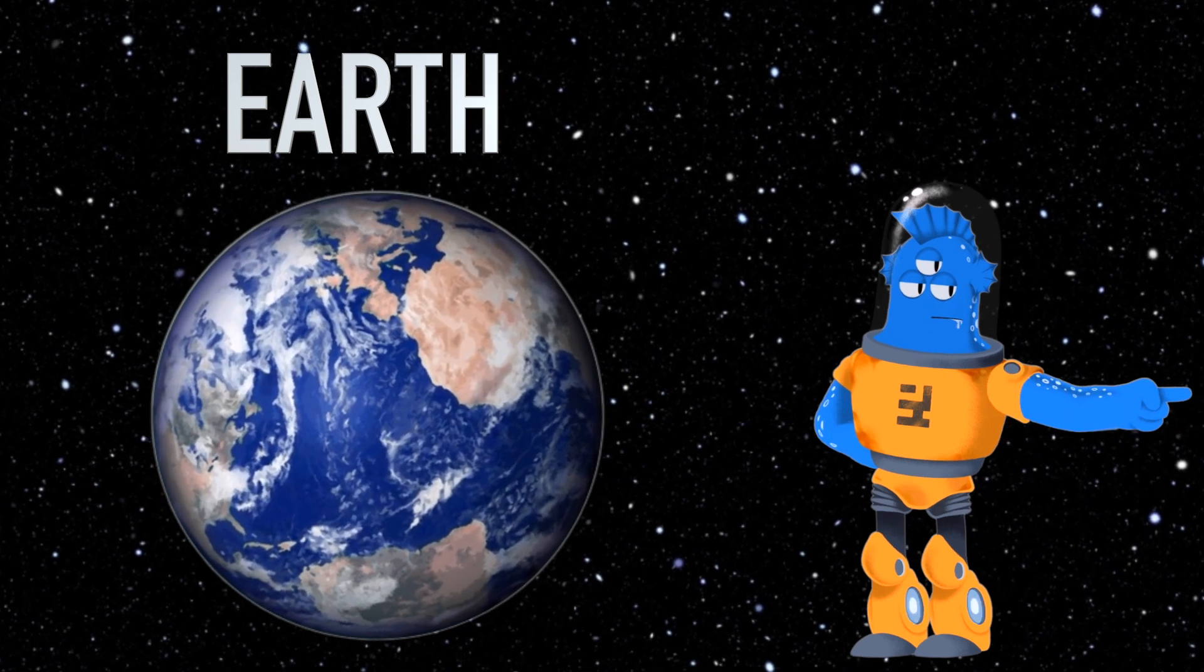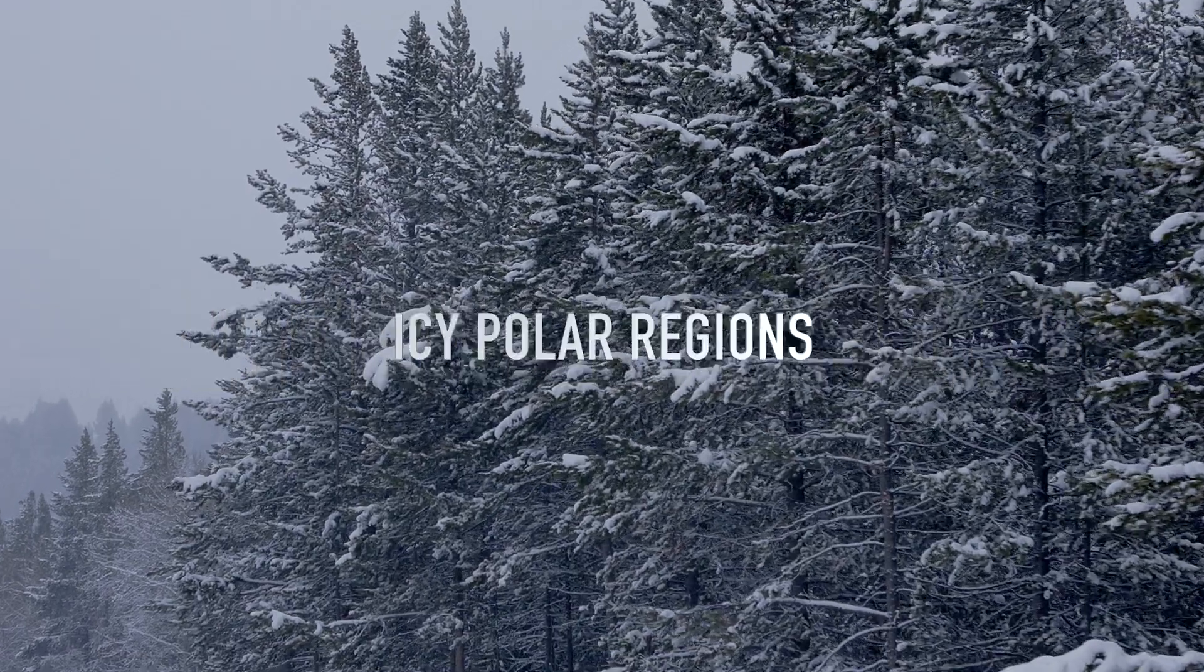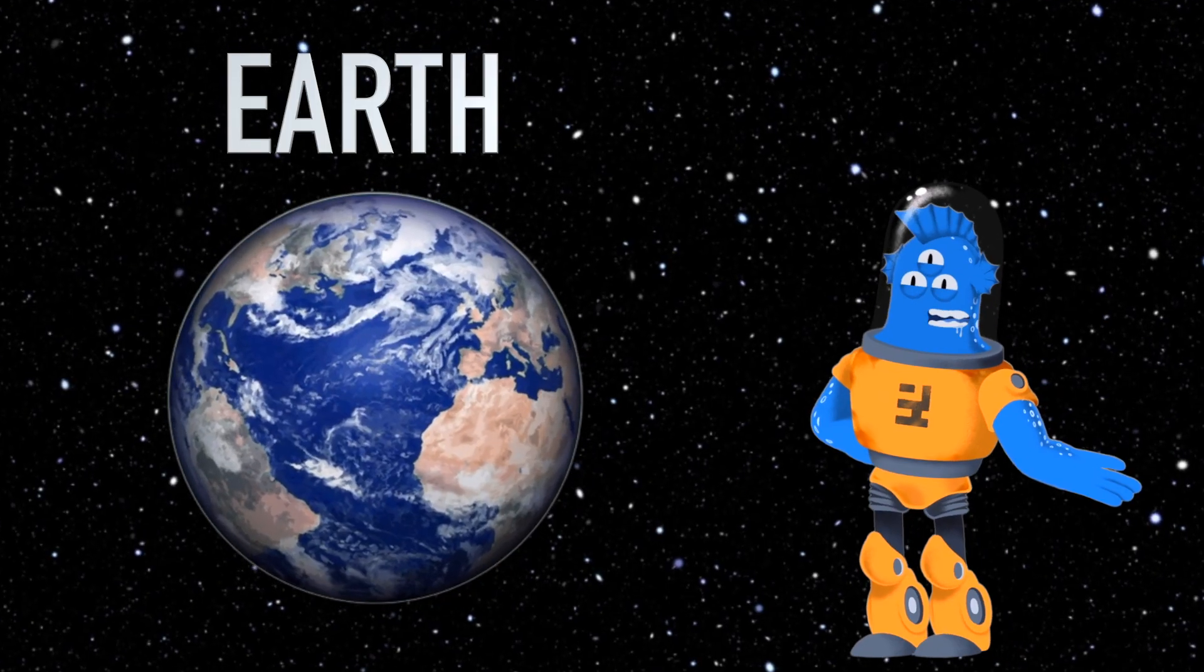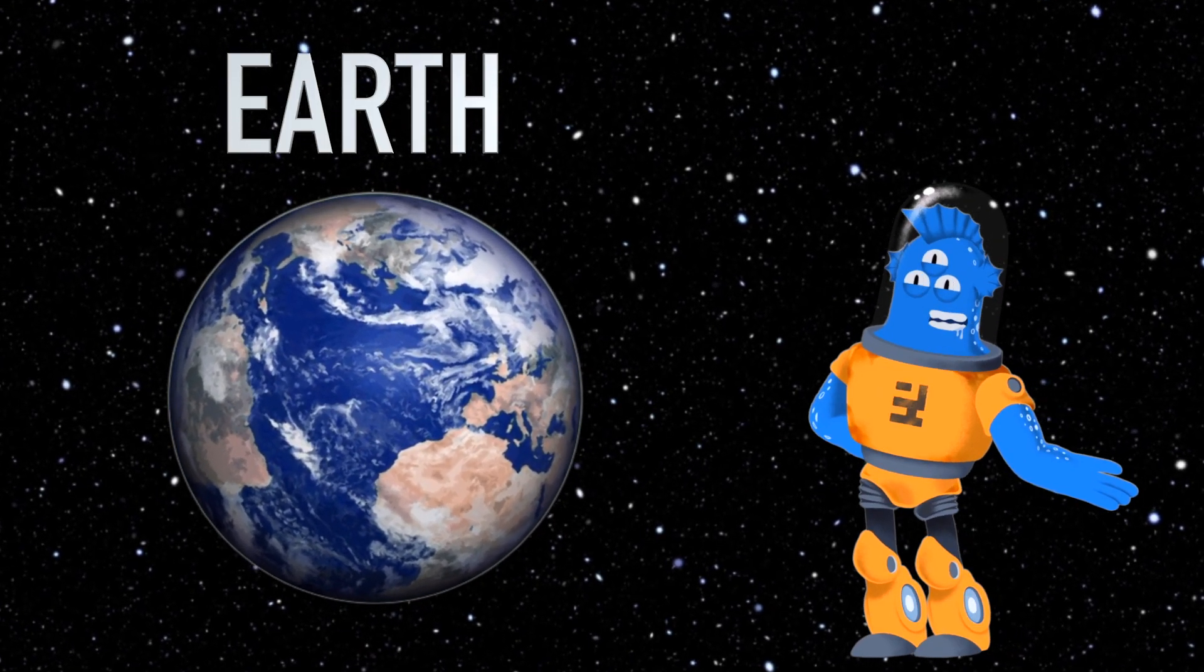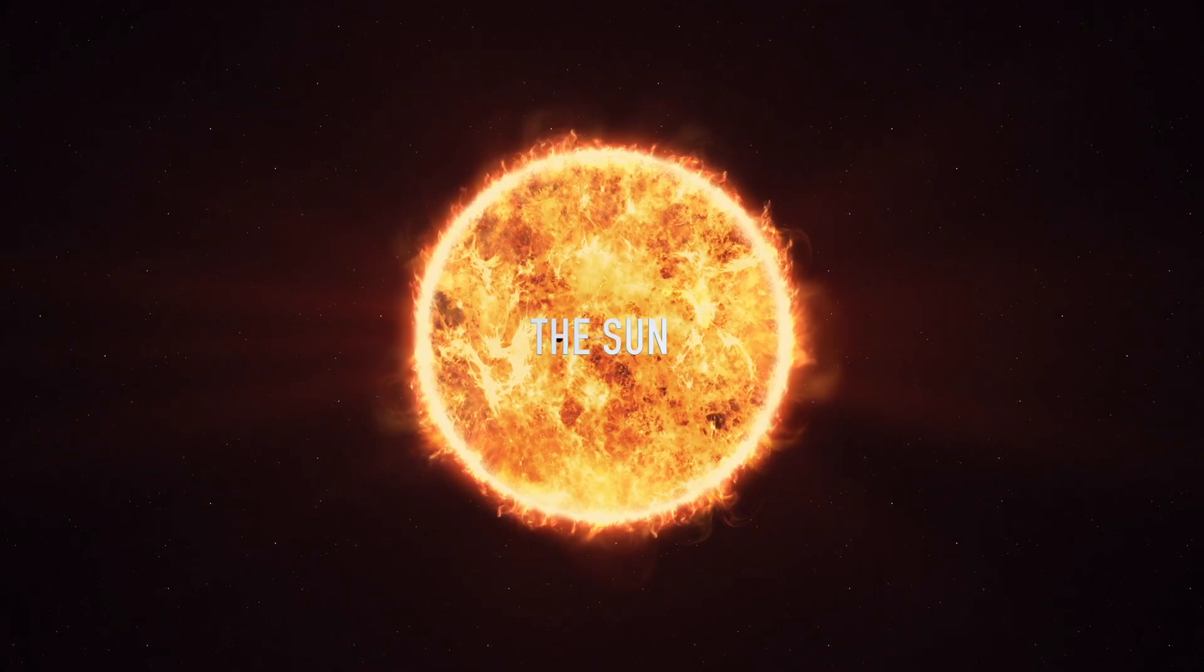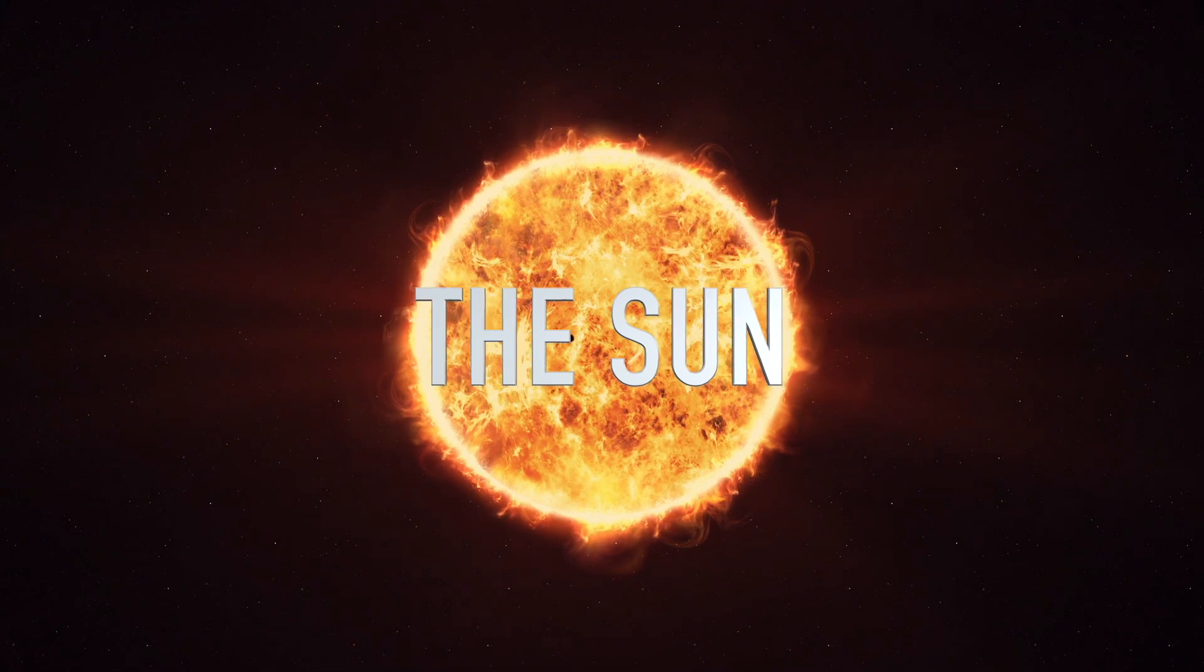Earth has a stunning variety of climates, from icy polar regions to hot sandy deserts. Each place has its own unique beauty and challenges. Our planet has some fantastic neighbours in the night sky, like the Moon, which orbits around us, and the Sun, which gives us light and warmth every day.